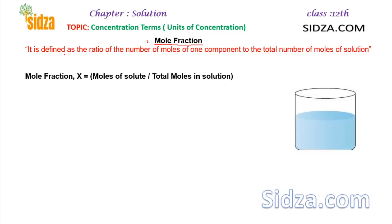Mole fraction is defined as the ratio of the number of moles of one component to the total number of moles of the solution. So basically if you have two components in a solution — suppose component A and component B, where B is the solute and A is the solvent — the mole fraction of component A will be equal to the number of moles of A divided by the total number of moles of the solution.